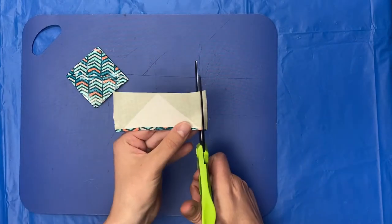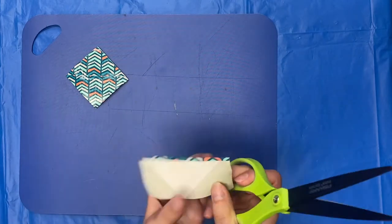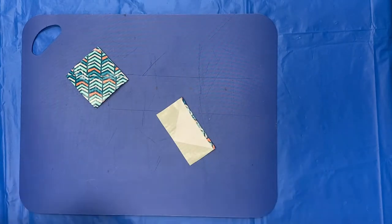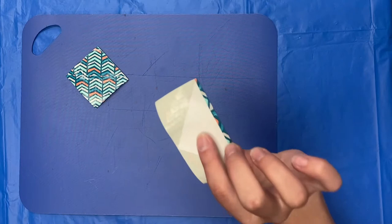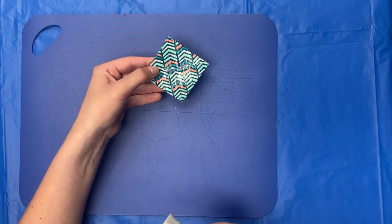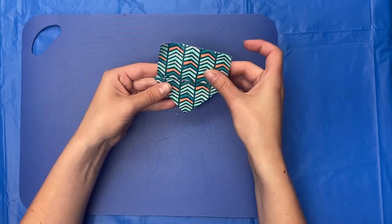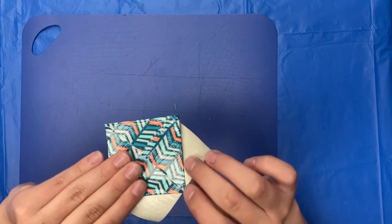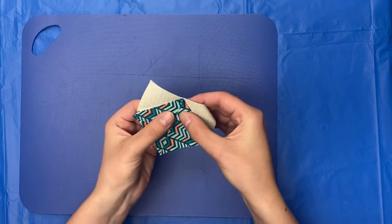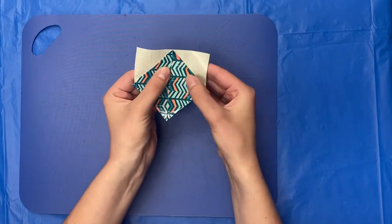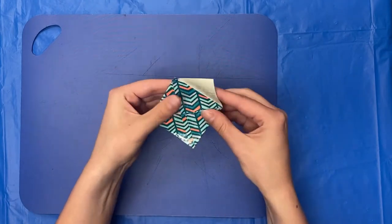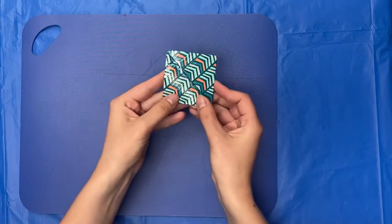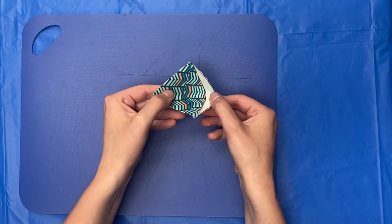Then take your scissors and cut a straight line off the edges. Take your triangle and place it on the front of the square. Line up the tops and fold the tape over. Your bookmark is now ready.